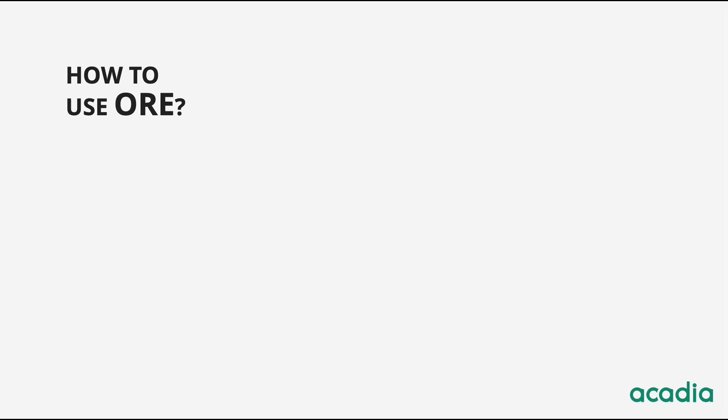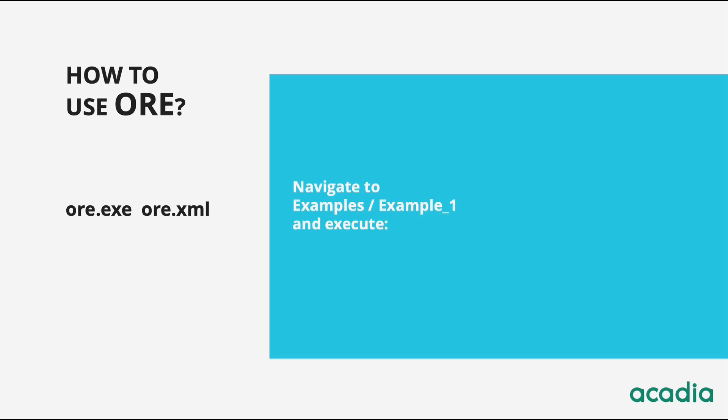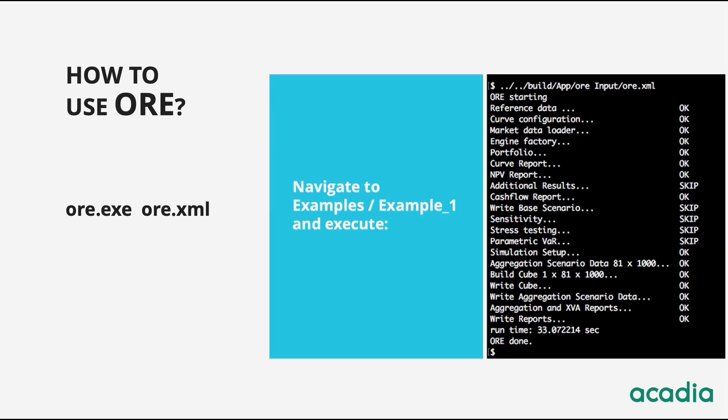Once you have downloaded or built ORE, how do you use it? To run the ORE program, you call it on the command line simply like this — with a single input file called ore.xml that tells ORE what to do and where to find the relevant inputs. Try it on one of the examples provided in the release, say Example 1, which is a textbook exposure and CVA calculation for a single uncollateralized interest rate swap. Navigate to the folder example 1 and call ORE as shown. This process would take about half a minute to complete.